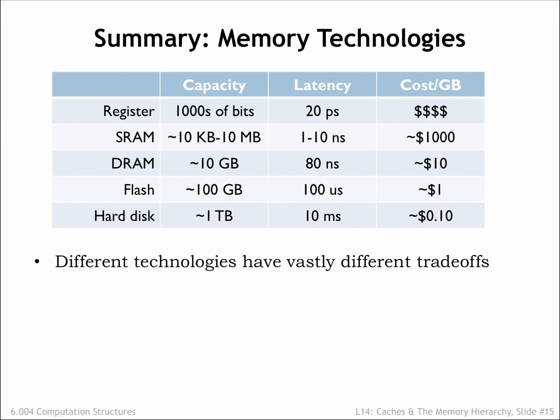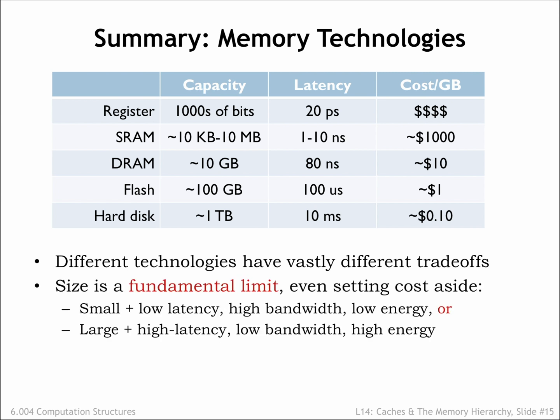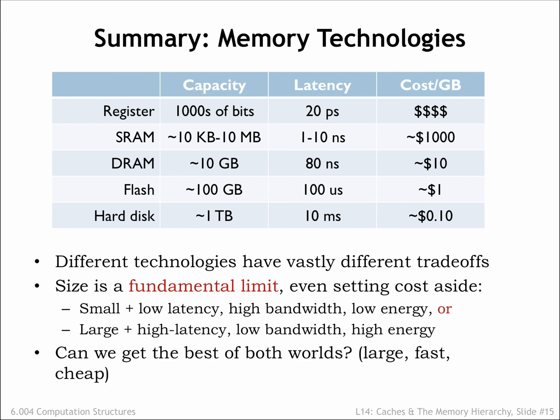But the gap between processor cycle times and DRAM access times has continued to widen, increasing the challenge of designing low-latency, high-capacity memory systems. The capacity of available memory technologies varies over 10 orders of magnitude, and the variation in latencies varies over 8 orders of magnitude. This creates a considerable challenge in figuring out how to navigate the speed vs. size trade-offs. Each transition in the memory hierarchy shows the same fundamental design choice: we can pick smaller and faster, or larger and slower.